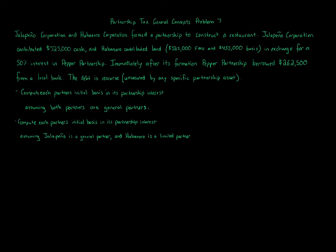This debt is recourse and unsecured by any specific partnership asset. The problem asks us to compute each partner's initial basis in their partnership interest: first assuming both partners are general partners, and second assuming Jalapeno is a general partner and Habanero is a limited partner. This problem deals with partnership tax and liabilities.